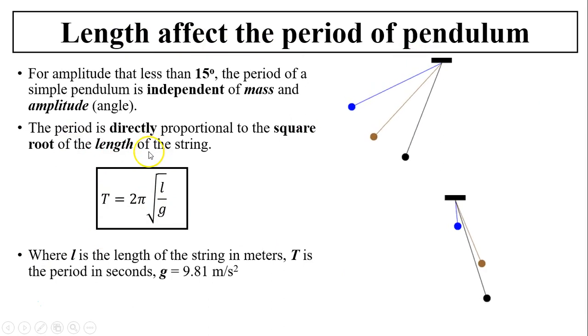So how does the period depend on the length? Period is directly proportional to the square root of the length. T equals 2π times square root of L over g. As you can see here, there are three different pendulums. The pendulum with the longest length, biggest L, has the biggest period. The smallest length has the smallest period.